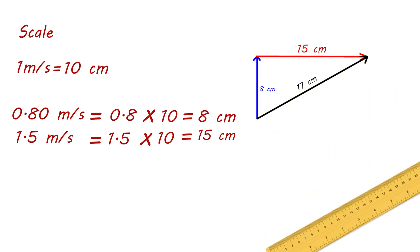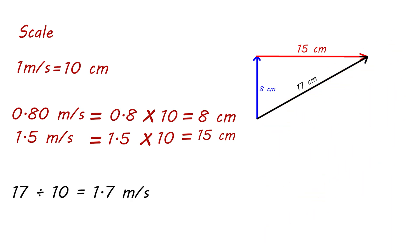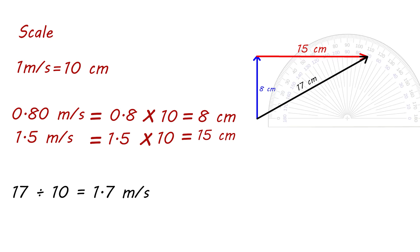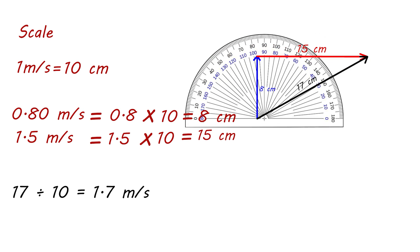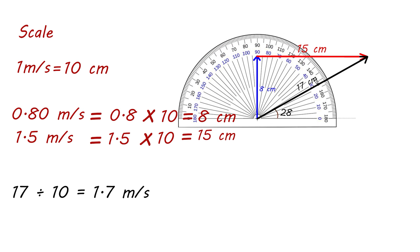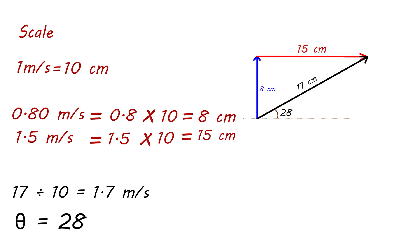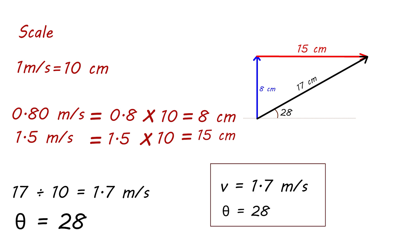The magnitude of the resultant vector can be measured using a ruler. To find the actual velocity in meters per second, we divide the length of the resultant vector by 10, considering our drawing scale. The direction of the car's velocity is indicated by the angle between the resultant vector and the x-axis. The angle can be measured with a protractor. So the car's resultant velocity is 1.7 meters per second at an angle of 28 degrees with the x-axis.